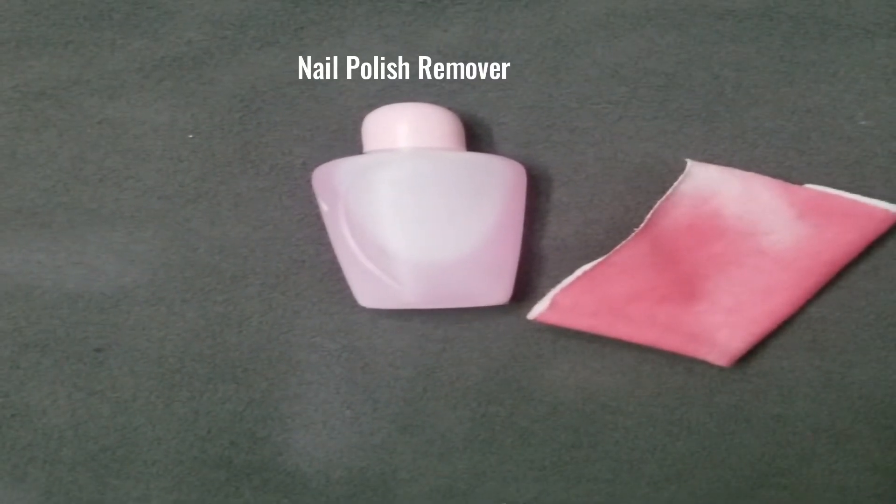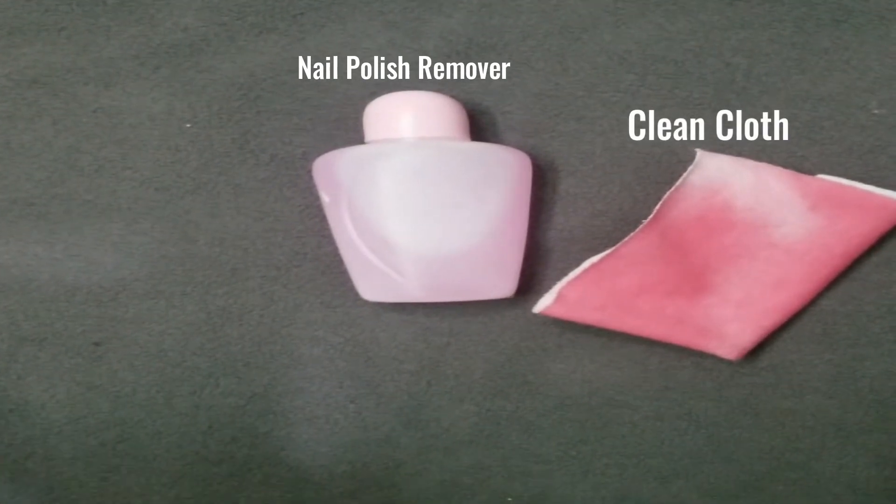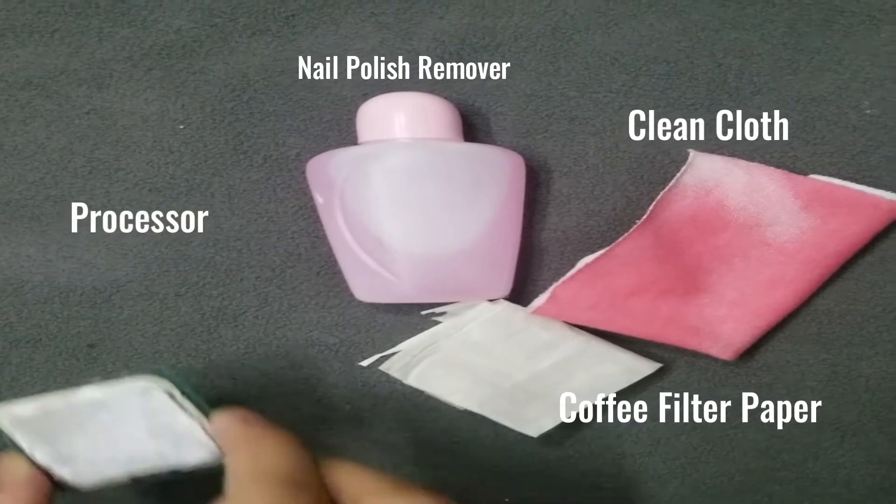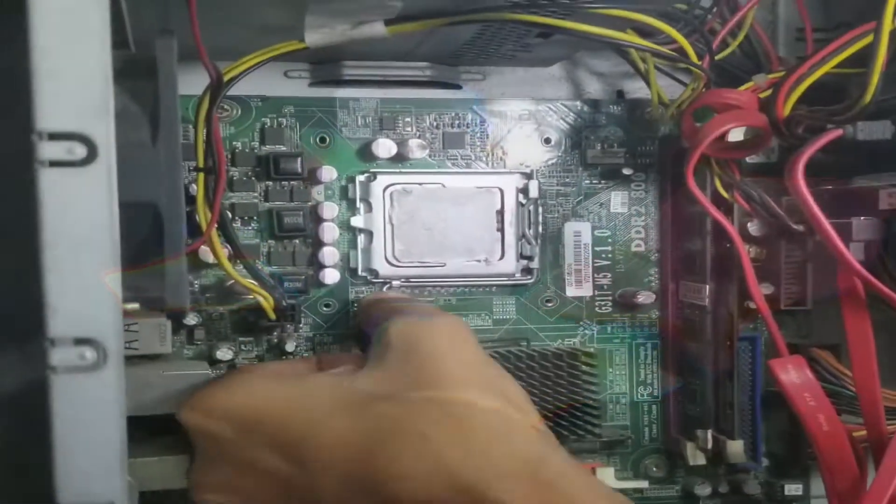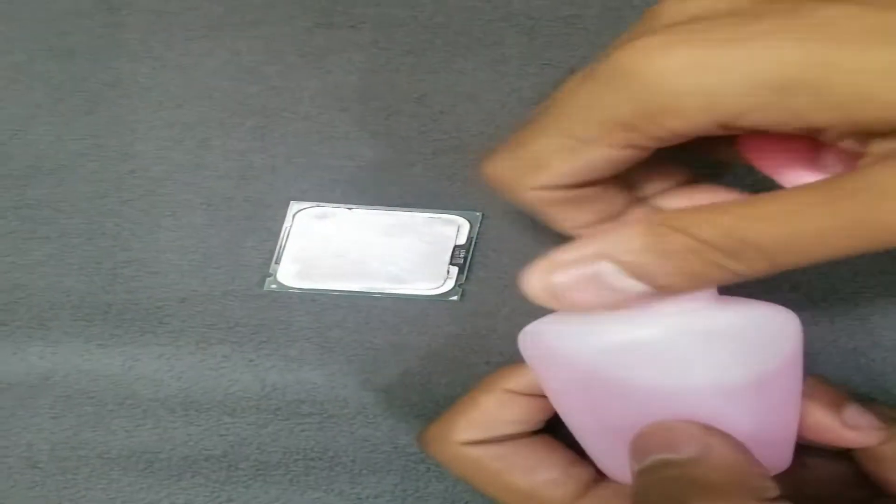For the first method you will need a nail polish remover that you can find in any general store near you, a soft clean cloth or coffee filter paper, and the processor.